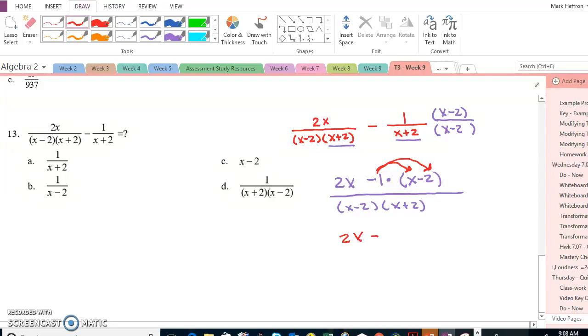So now I have 2x minus x, a negative times a negative is a positive 2, all over that same denominator. So simplifying like terms in the numerator,